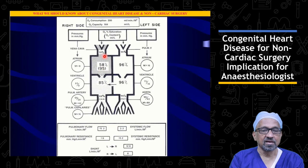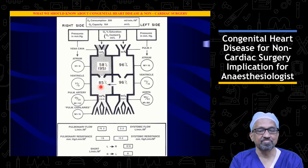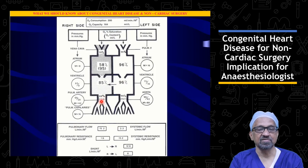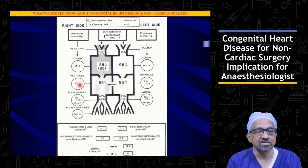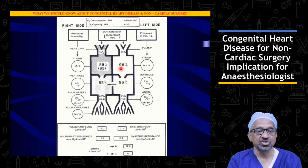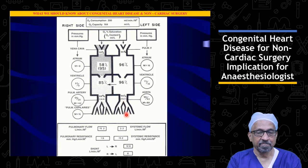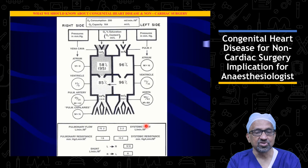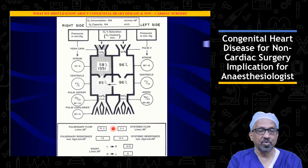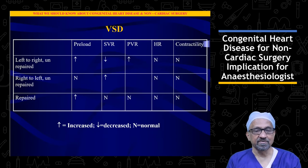The oximetry and pressure data in this VSD patient: right atrial saturation is about 58–60%, increasing to 85% in the right ventricle as a result of the left-to-right shunt across the VSD, and 85% in the pulmonary arteries. Right ventricular pressure is increased at 60/9 and pulmonary artery pressure is also increased at 60/20. Left atrial saturation is 100% and left ventricular saturation is about 96%. Pulmonary flow is 15.2 versus systemic flow of 3.2 — a Qp/Qs ratio of about 5.